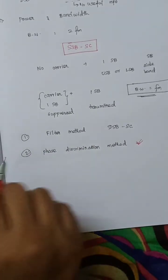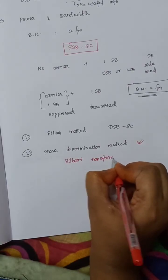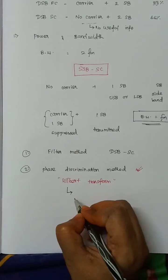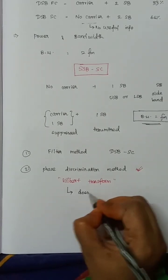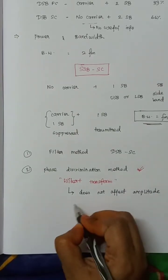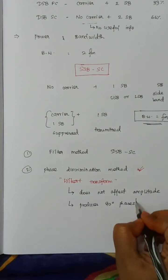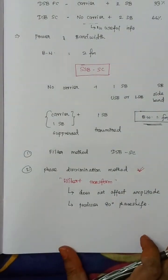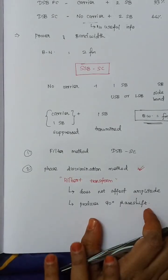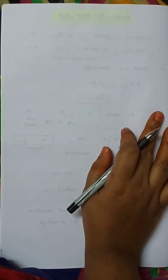The second method is the Phase Discrimination Method. In this method, the Hilbert Transform is used. The Hilbert Transform does not affect the amplitude, but it produces a 90-degree phase shift. Using this method, a Single Sideband Suppressed Carrier signal can be generated.